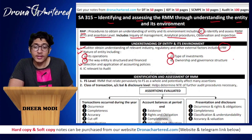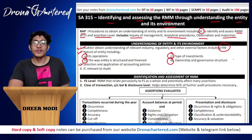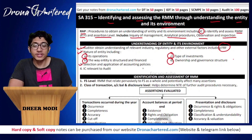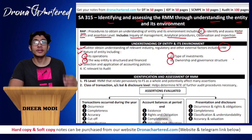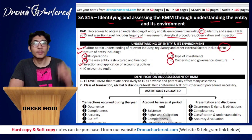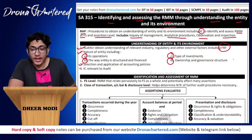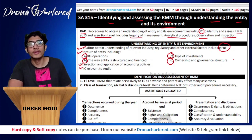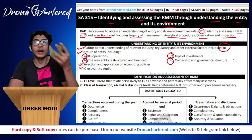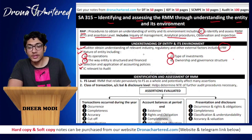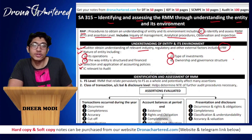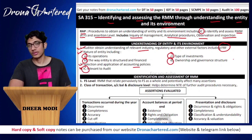The third point is selection and application of accounting policies - how does the entity select which accounting policies are applicable to it and then how does it apply those policies. And fourth is your internal controls relevant to audit. So these four points - relevant industry, nature of entity, accounting policies, and internal controls - are needed to understand the entity.